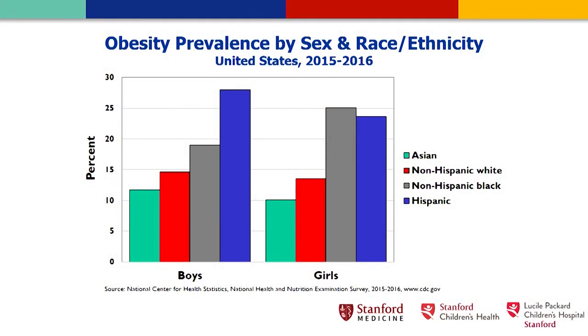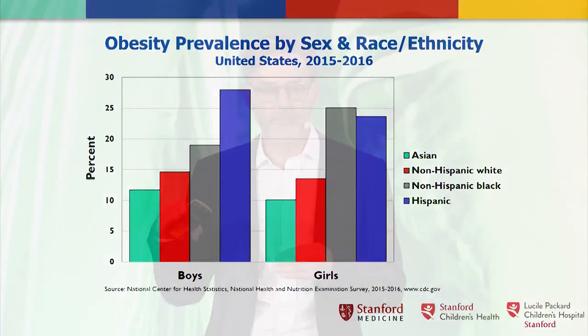Obesity is not distributed equally across the population. In the United States, socioeconomic status, race, and ethnicity are major risk factors. Hispanic boys, Hispanic girls, and non-Hispanic Black girls are at greatest risk, with rates of about 25% or more — roughly five times the rate we would consider normal based on the original reference population.